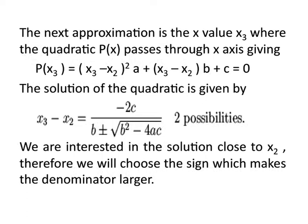Now, the next approximate value of the root can be obtained using these coefficients A, B, C in the quadratic curve equation. Suppose the quadratic curve passes through the x-axis at x = x3. We substitute x = x3 in the quadratic curve, and since it is passing through the x-axis, the value is 0. This gives a quadratic equation in (x3 − x2) as the variable with two possible solutions. To make x3 close to x2, we choose the sign of the √(b² − 4AC) factor so that the denominator becomes larger, making the difference x2 − x3 smaller.